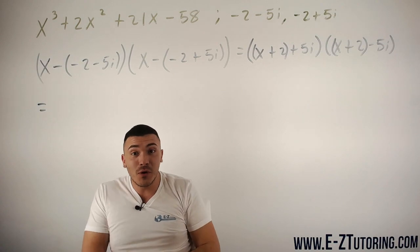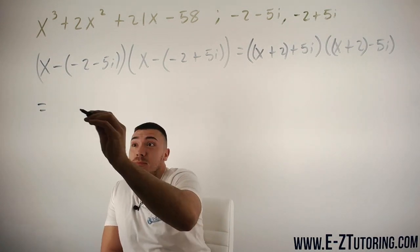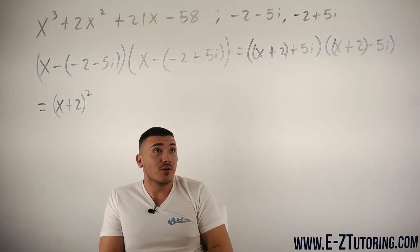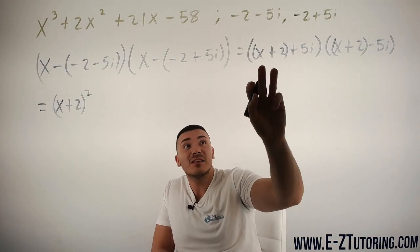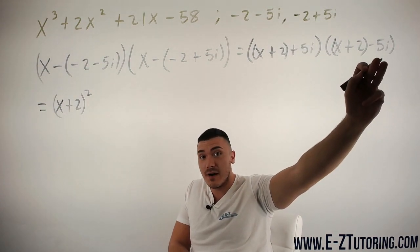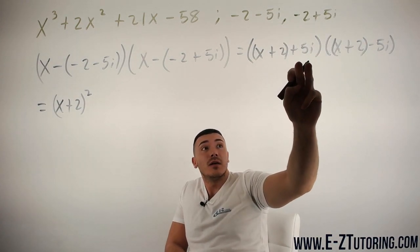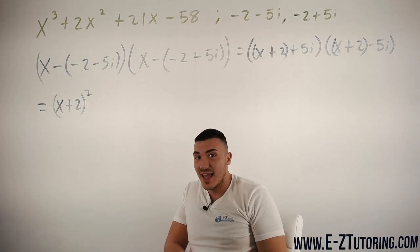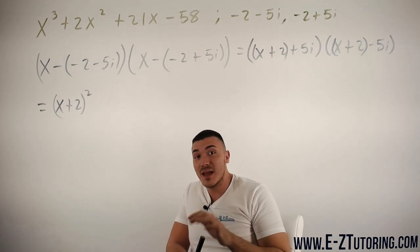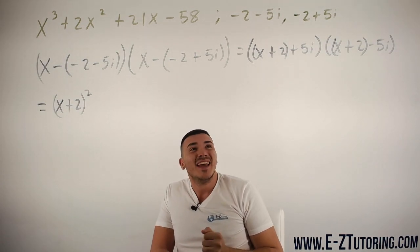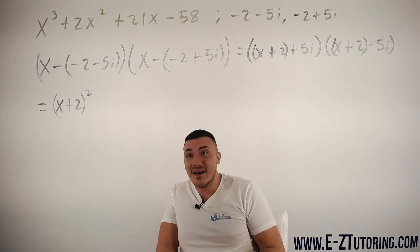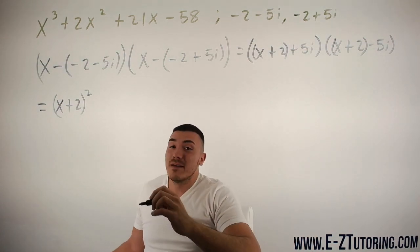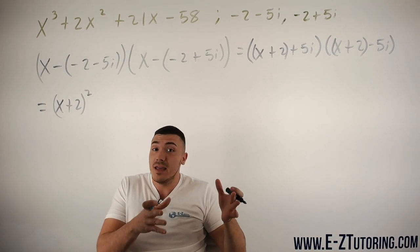So when we go ahead and foil this out, we will do (x+2)(x+2), which is (x+2)². We'll figure out what that is a little bit later. Then this is what I was talking about: (x+2)(-5i) plus (x+2)(5i). Those two terms will cancel. I'm not going to write it out just to save some time, but you can actually go ahead and foil this out and see how the middle two terms will cancel out. So then all we got to do is multiply the 5i and -5i, which gives us -25i².